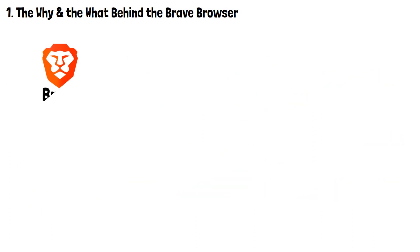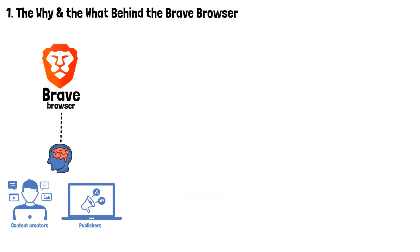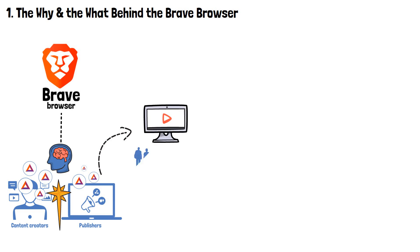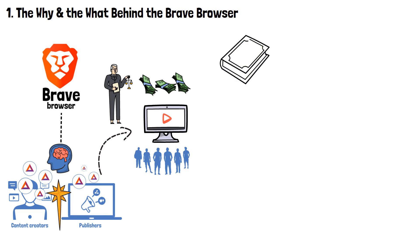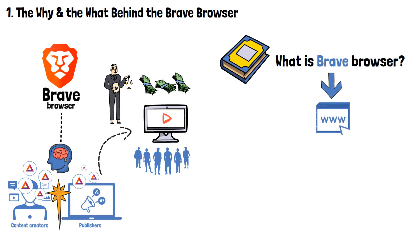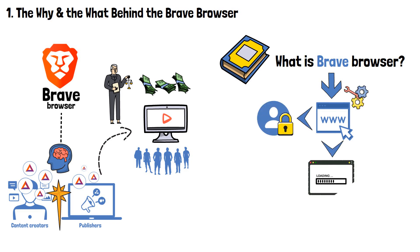The Brave Browser was created by thinking about both sides of the deal. Content creators and publishers also benefited from Brave's novel model — they could receive BAT tokens as rewards for their content, based on user attention, helping to establish a fairer compensation system. To sum up, Brave Browser is an internet browser created to address the pressing issues of online privacy, slow loading times, and the unfairness of the online advertising industry.